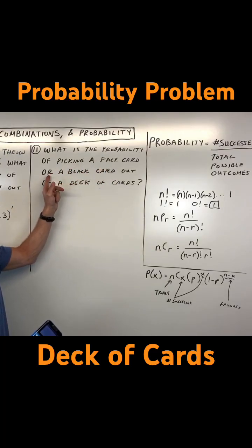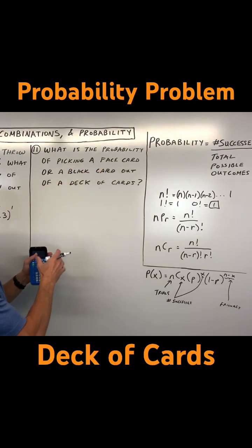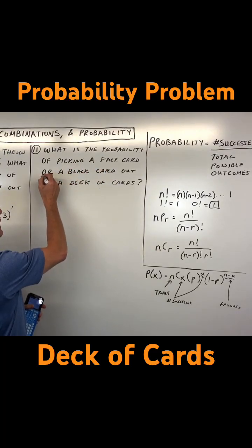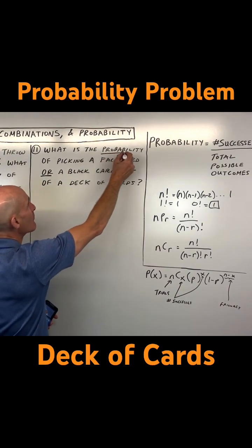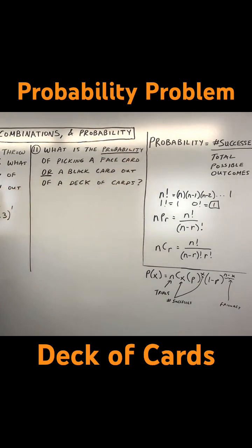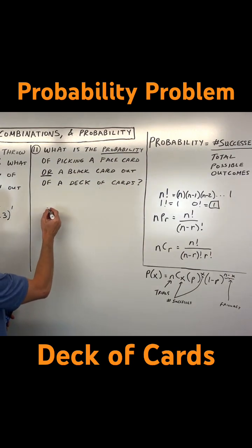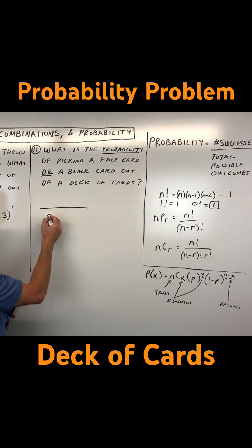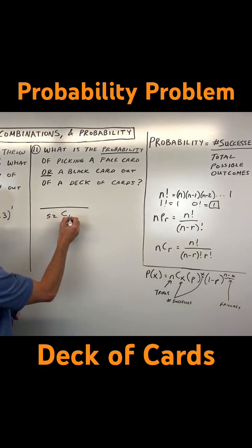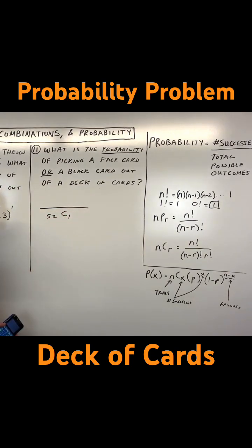Picking a face card or a black card out of a deck of cards. Now here we're talking about probability, and we talked about the breakdown of a deck of cards earlier. Remember when it's probability, it's going to be a fraction out of the total. So out of the 52 cards total, we're saying how many ways are there to choose one?